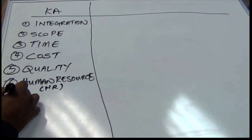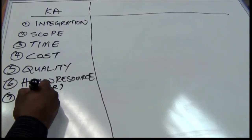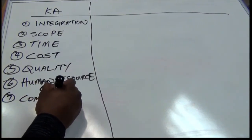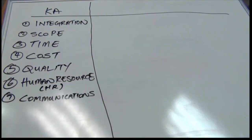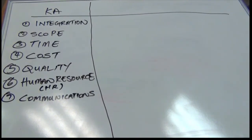The seventh knowledge area is communications — the communications management knowledge area. This is all about ensuring that communication needs are well defined, ensuring that communication is delivered in the right format when needed, and ensuring that you are adjusting to the stakeholders' needs as information or communication requirements change.